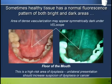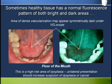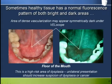Although the symmetry and shape of this dark area under Velscope is suggestive of normal tissue, the floor of the mouth is a high risk area for dysplasia. Watch out for non-symmetrical areas giving a unilateral presentation — these should increase suspicion of dysplasia or oral cancer.